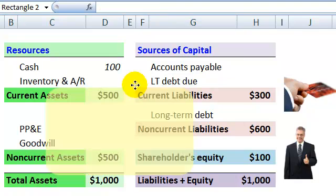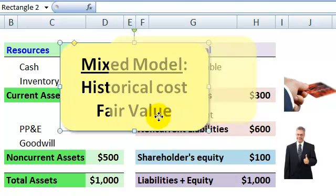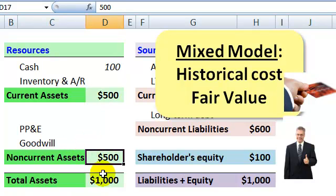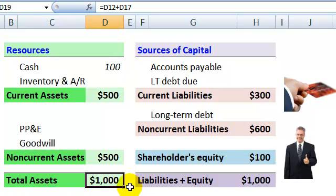The balance sheet is what's known as a mixed model — a combination of historical cost and fair value. In our example, if the company purchased plant, property, and equipment or real estate for $500, that's the historical cost, and that's the value that will stay on the books. As time goes by, this is less likely to equal the fair value of these assets, so we say the balance sheet reflects the book value of assets and liabilities. We don't assume that this book value equals the fair value or market value — it may be very different.